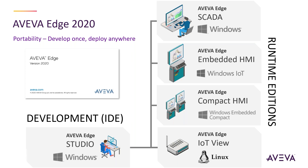For those who knew the old nomenclature: the runtime for Windows used to be called Full Runtime — the new name is Aviva Edge SCADA. For Windows IoT, it used to be Embedded View — now it's Aviva Edge Embedded HMI. For Windows CE, it used to be CE View — now it's Aviva Edge Compact HMI. And for Linux, it used to be IoT View — now it's Aviva Edge IoT View. These are newer versions with more functional names aligned with the overall portfolio nomenclature.